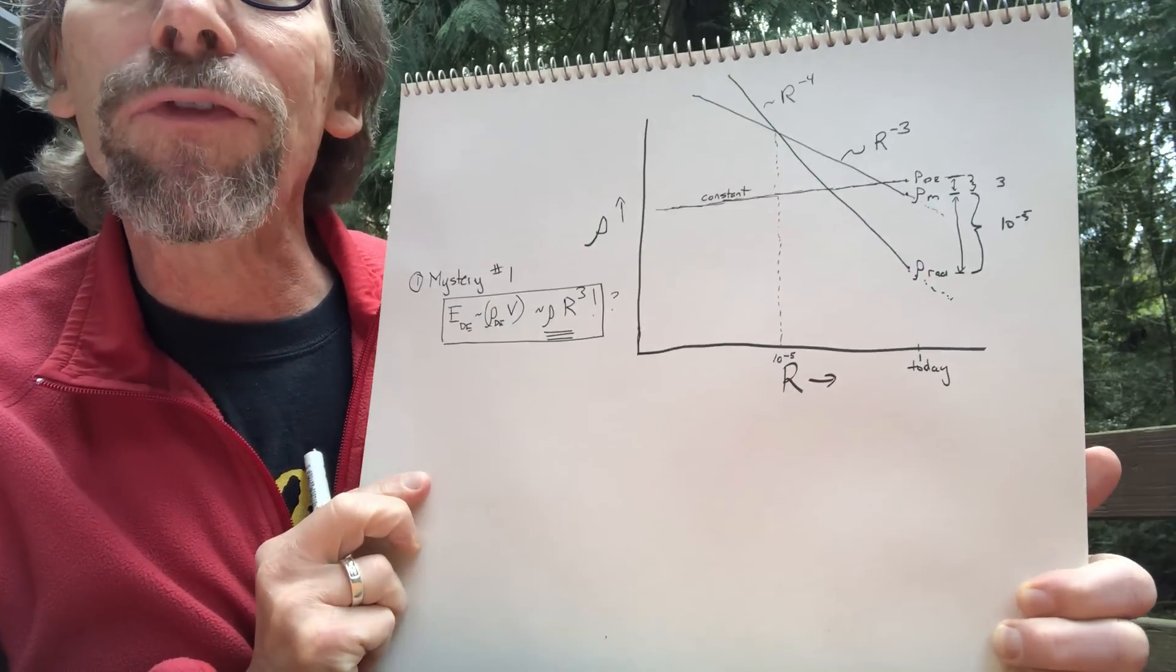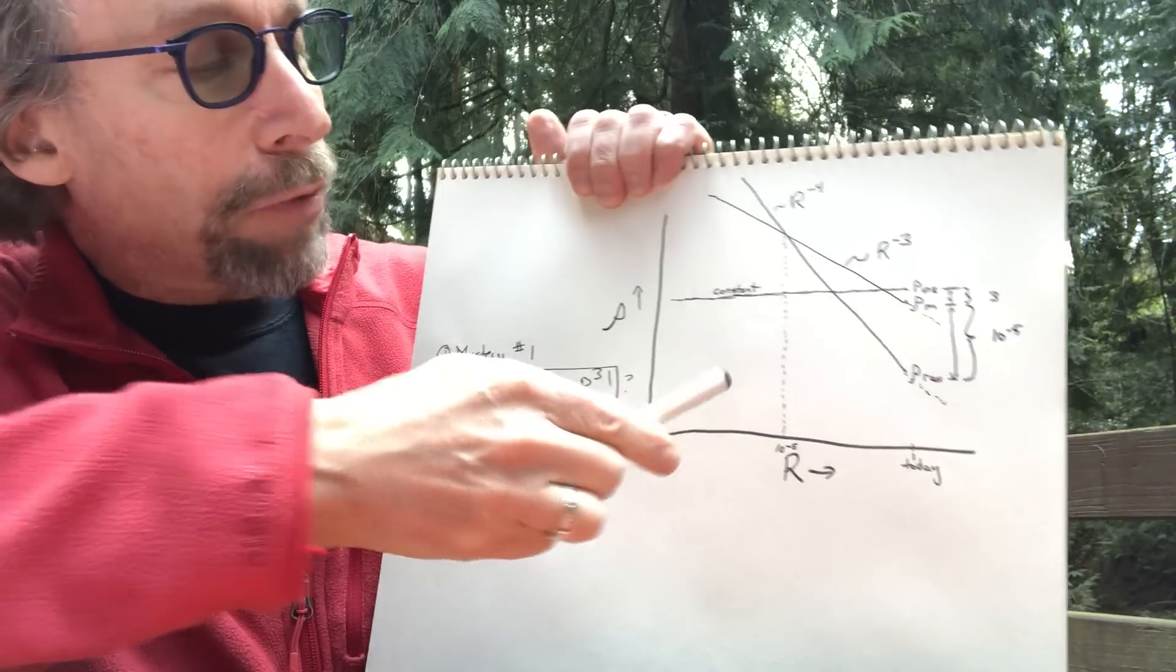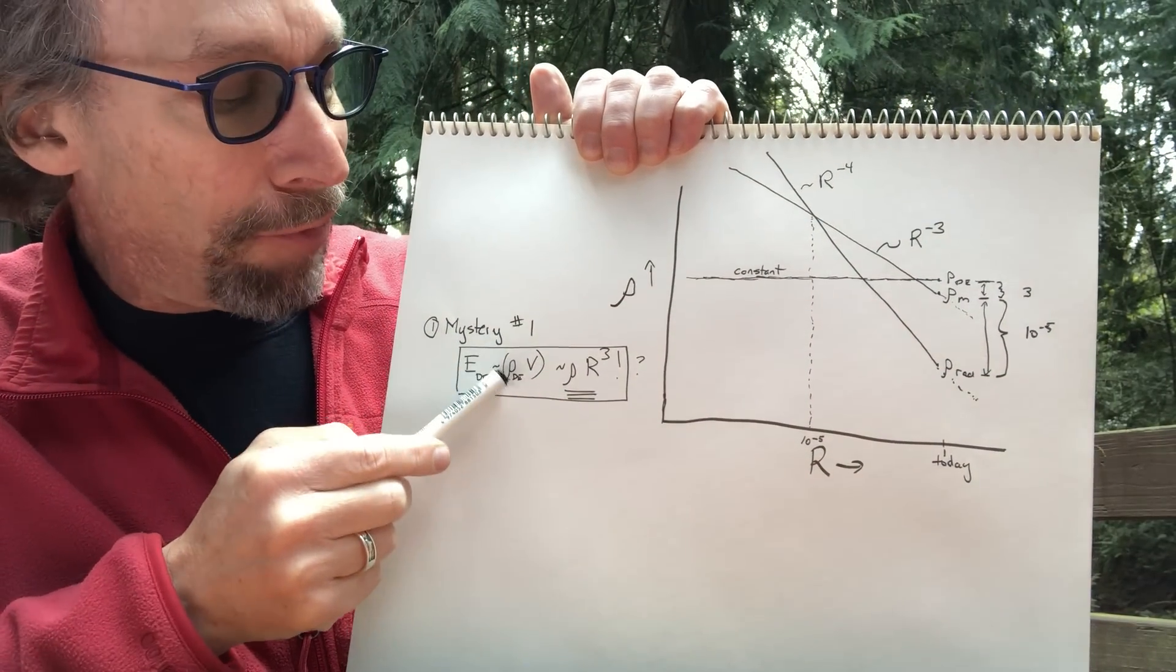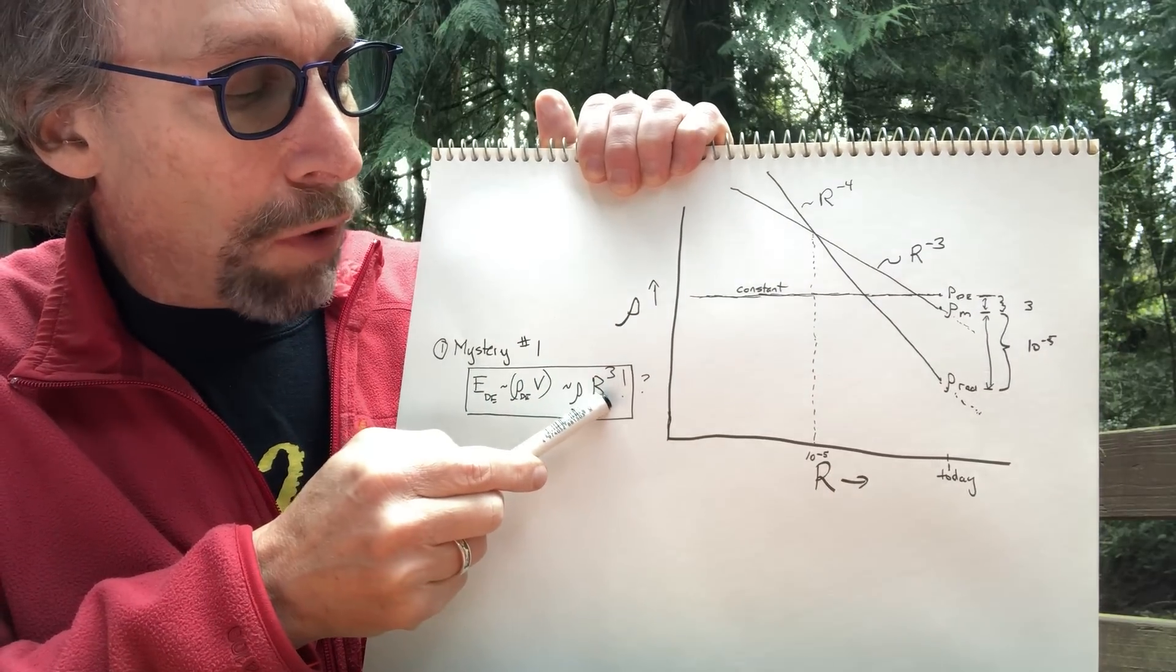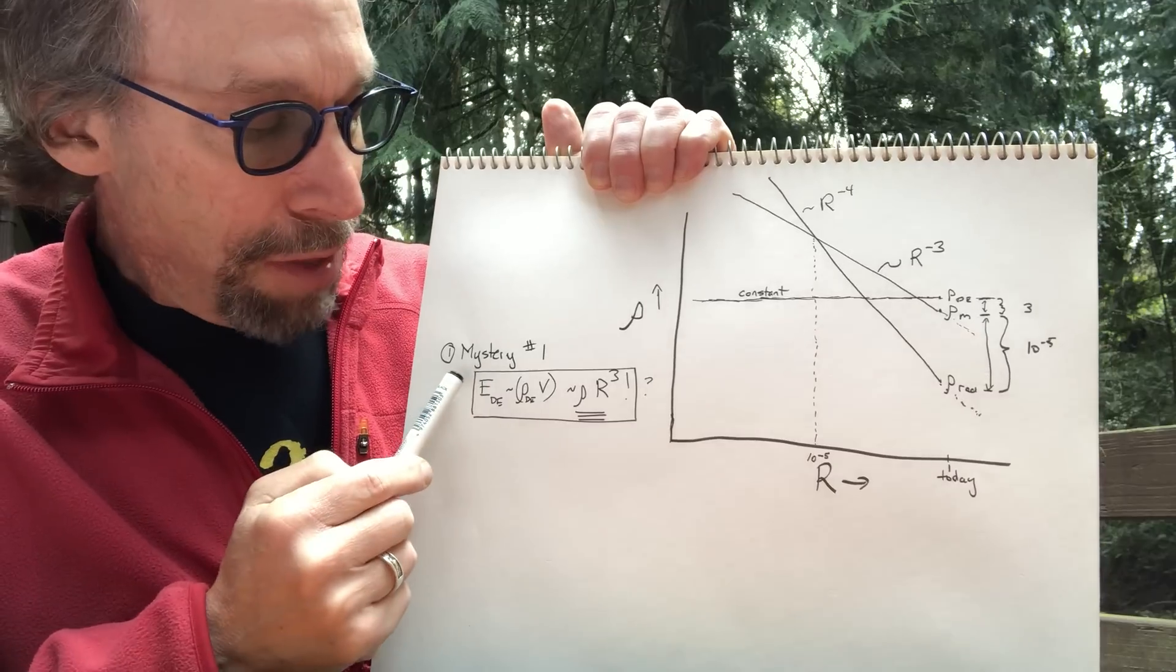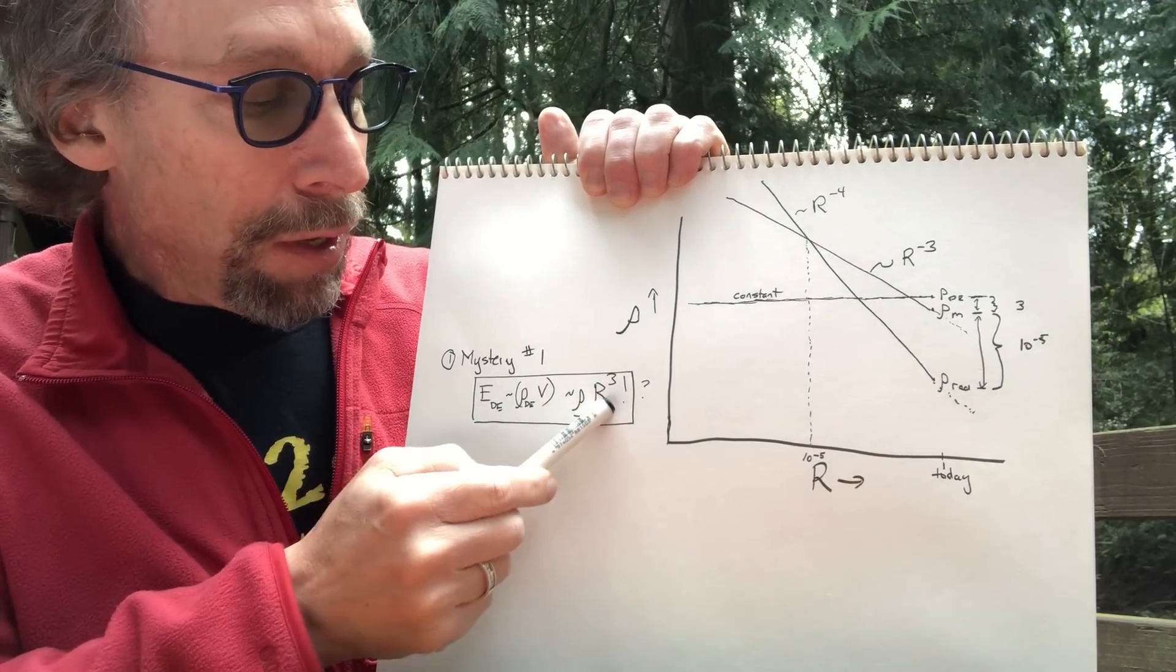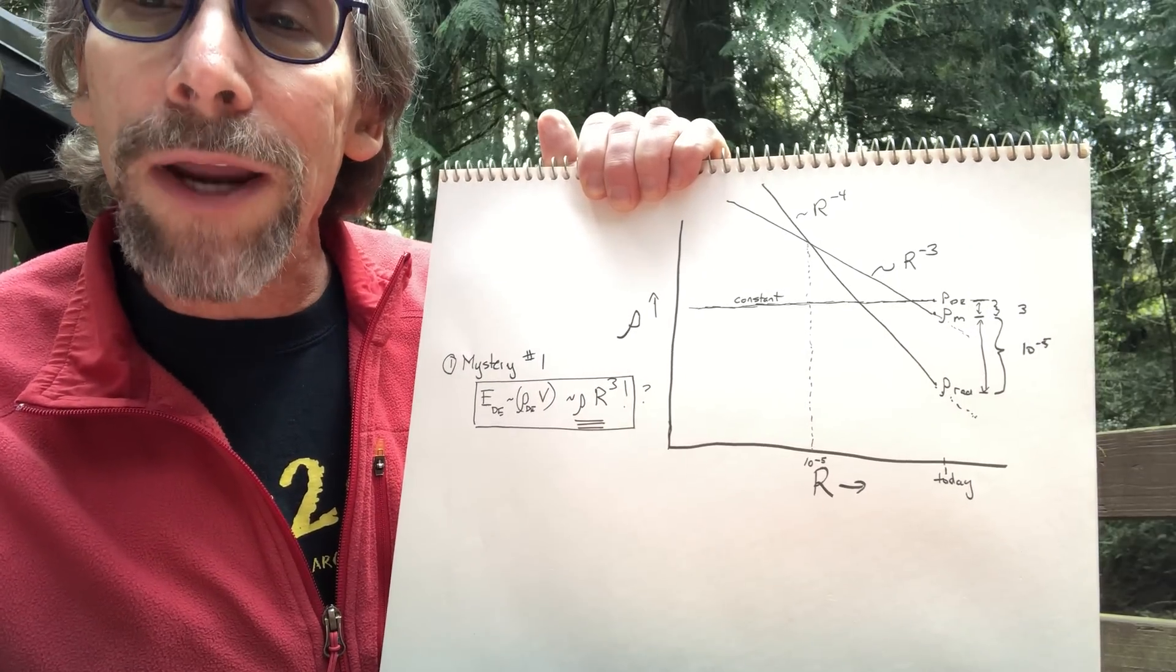Now, I talked about a few of the things that were weird about it, but one was thinking about the total energy in any given volume. The total energy in any given volume is the energy density times the volume. But the volume goes as R cubed, and if the energy density of dark energy remains constant, then the total energy in any volume as the volume grows in empty space, in dark energy, grows as the cube of the radius.